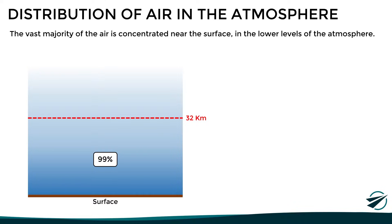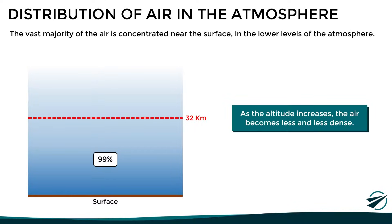With this, it is evident that as the altitude increases, the air becomes less and less dense. However, despite the fact that below 32 kilometers of altitude we find 99% of atmospheric air, above this level we still find molecules of air, but they are very spread apart.